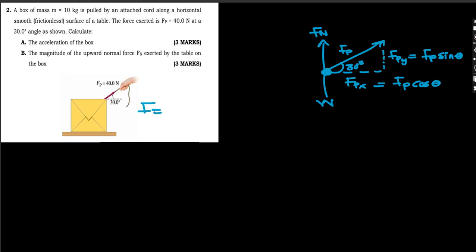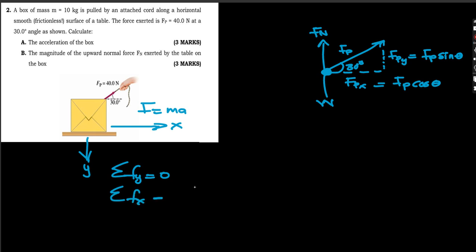Now we can find the acceleration of the box by applying Newton's second law. The object moves in the direction of the force. Since the cord is pulled along a horizontal smooth surface, the object moves in the x-direction. There is no motion in the y-direction, so the summation of forces in the y-direction equals zero, while the summation of forces in the x-direction equals mass times acceleration.